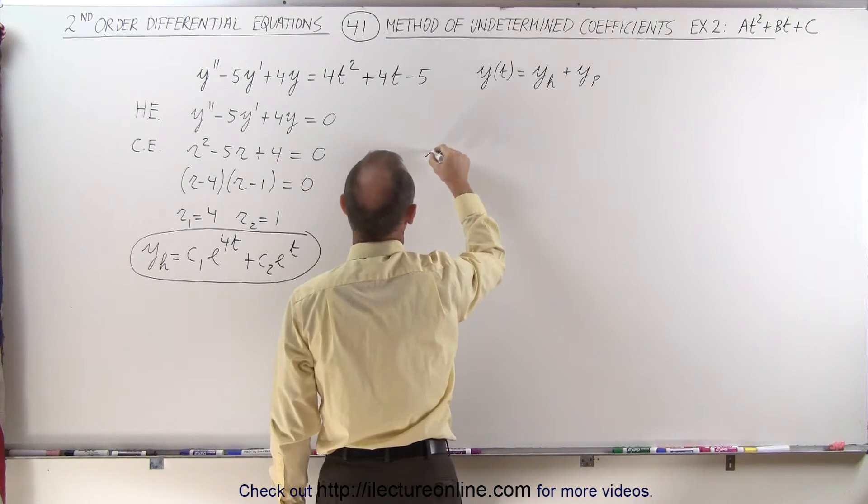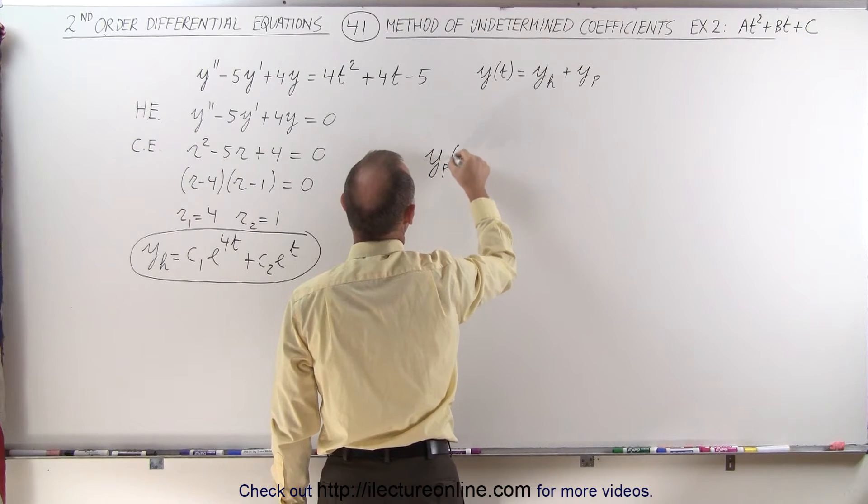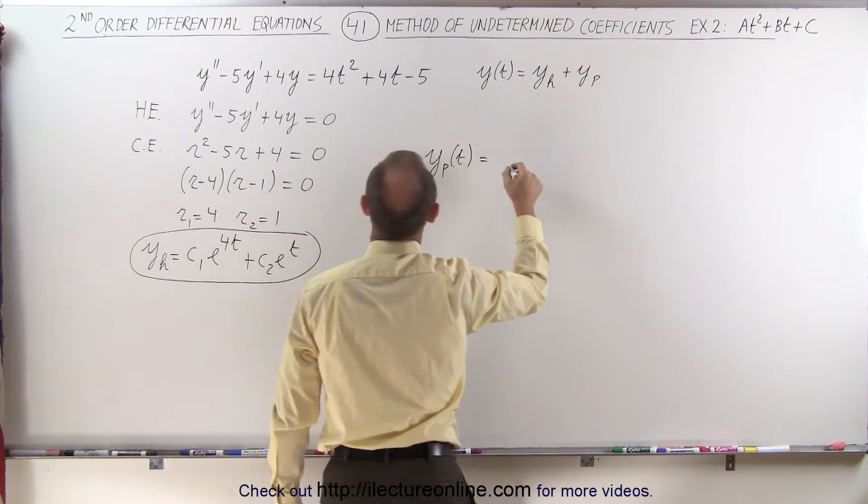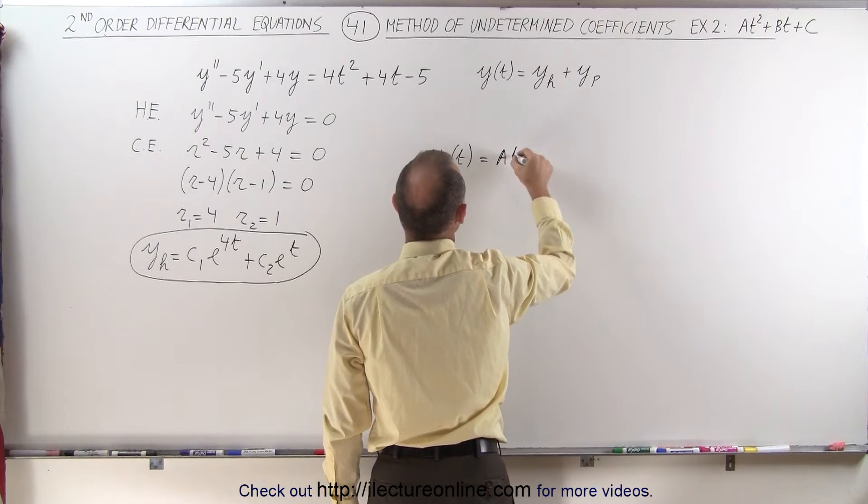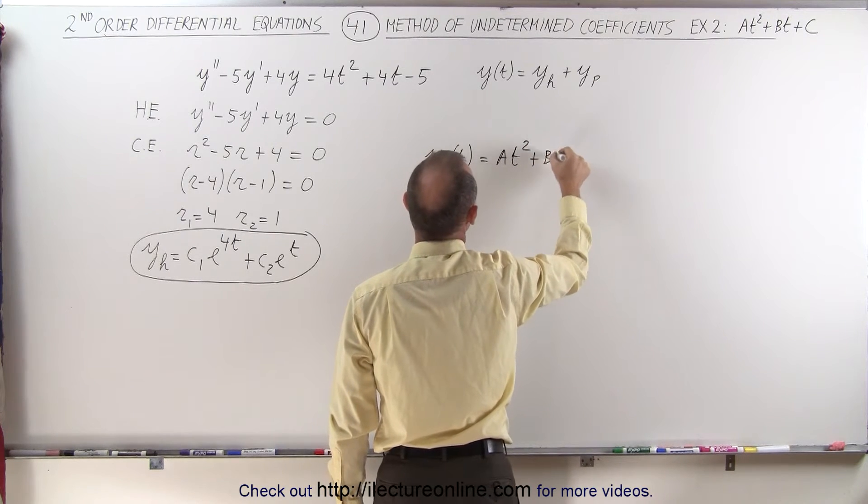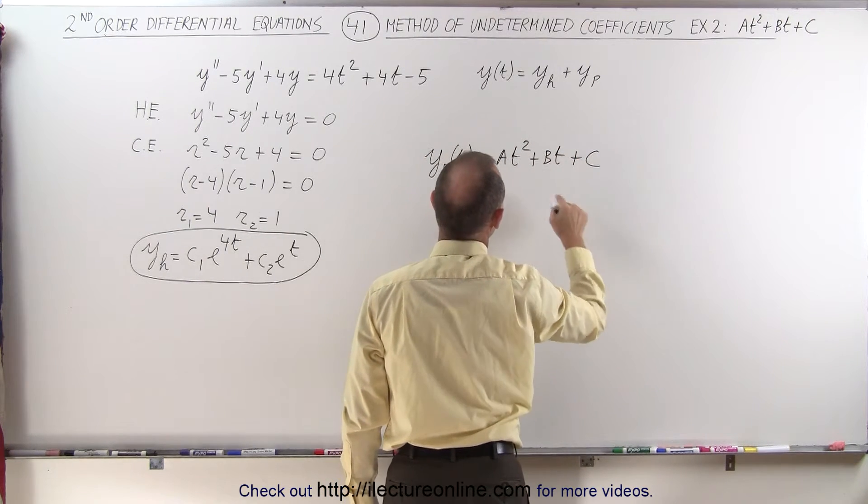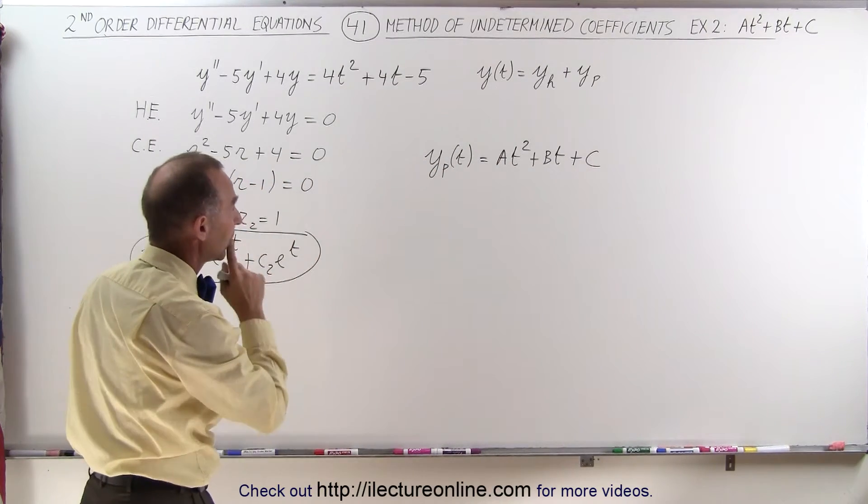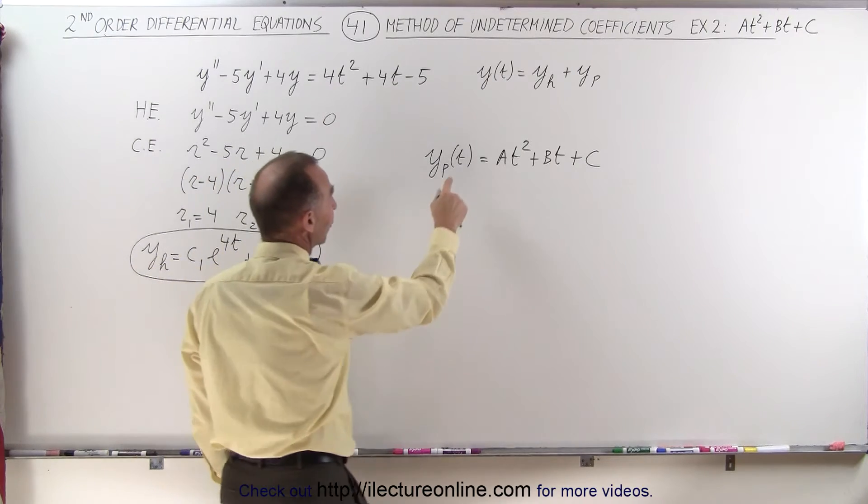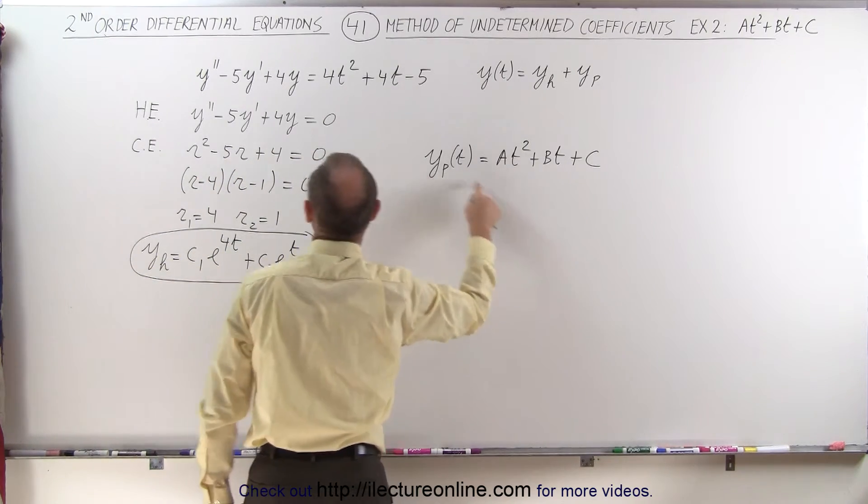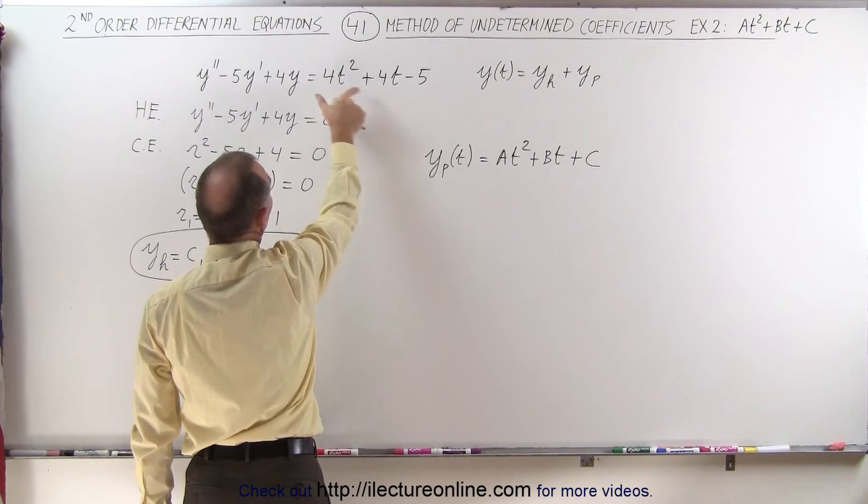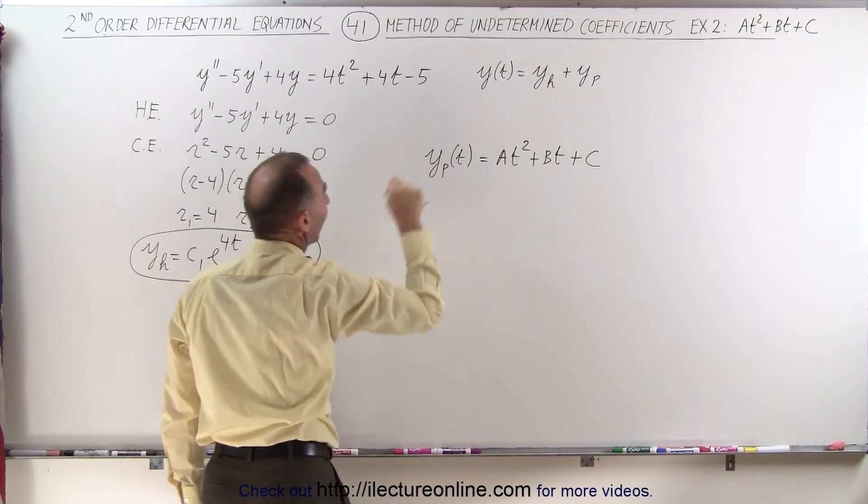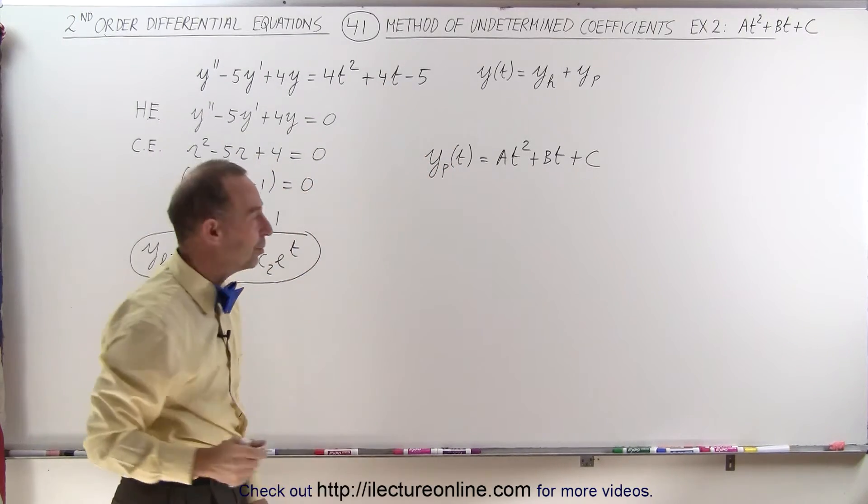And so we can then say that the particular solution must have the form as follows: a t squared plus b t plus c. And what we have to do here is determine what those particular coefficients are. To do that, we're going to take the first and second derivative of this and plug it back into the original equation and set it equal to the right side to find those coefficients.